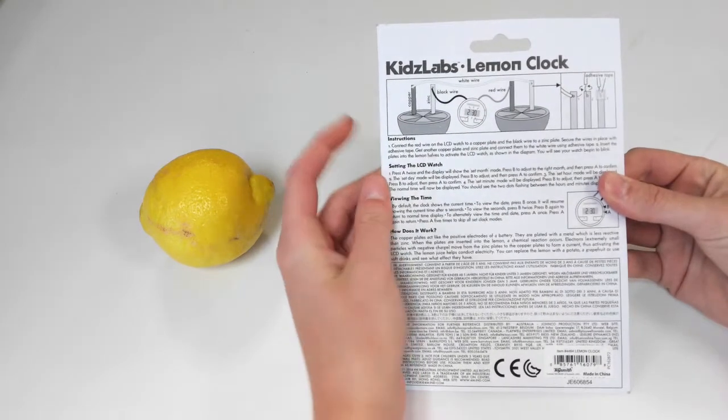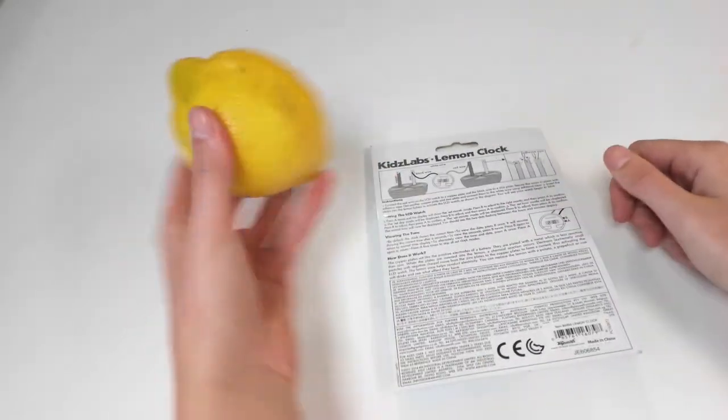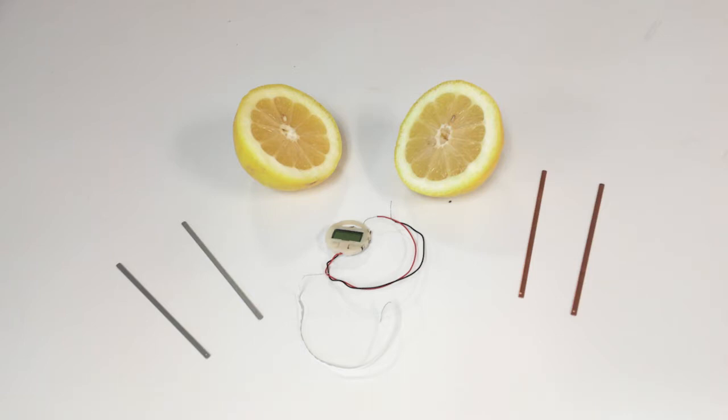but if you don't have the kit, you can still complete this project with one lemon cut into halves, two galvanized metal pieces per lemon, two copper metal pieces per lemon, three insulated metal wires per lemon, and a small battery-powered clock.